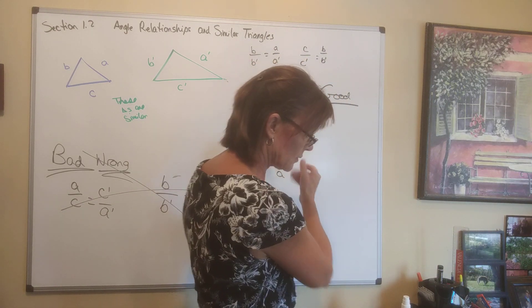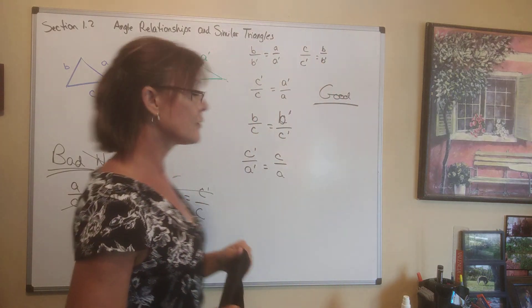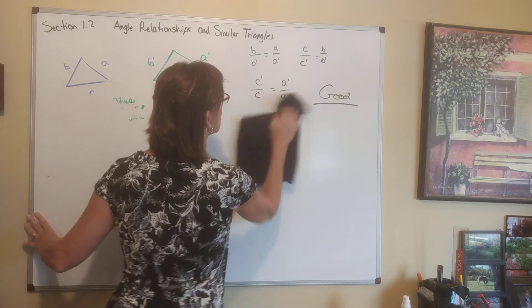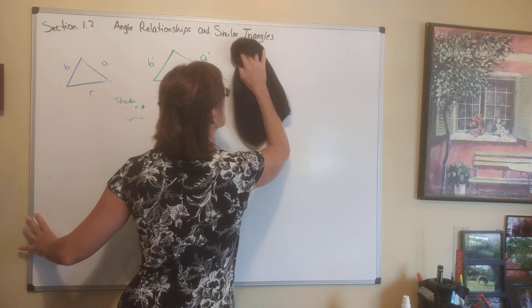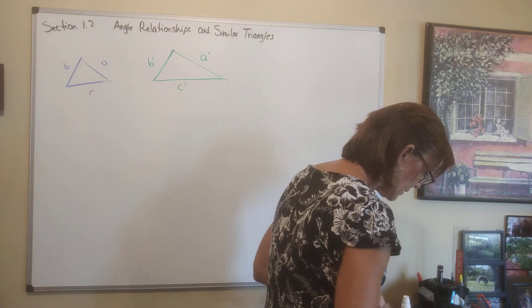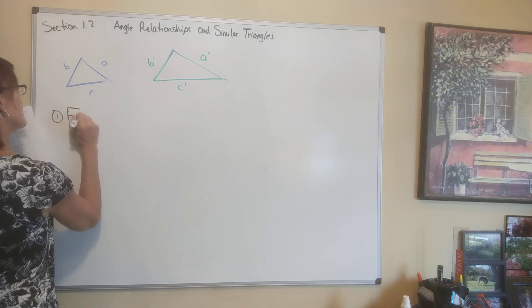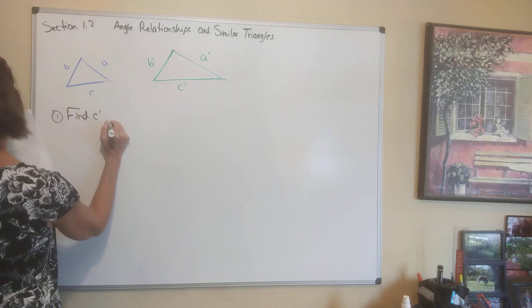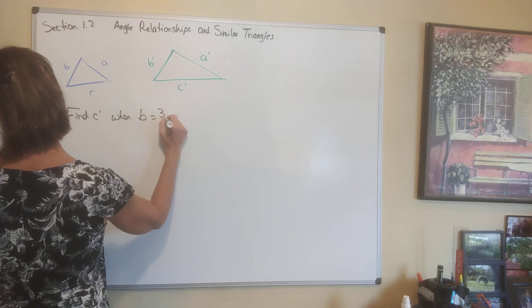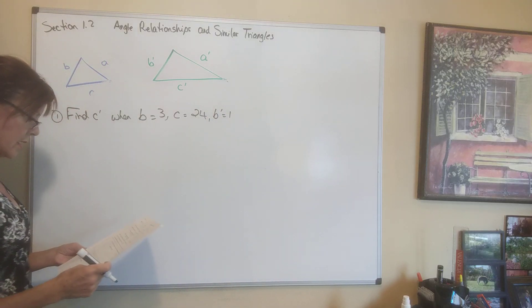There's a little bit of consistency we have to be careful about when making these proportions, but there are a lot of good ones we can use — as long as we stay in the good ones, we will get right answers. We have four examples. Number one says find C prime.